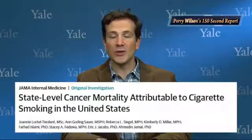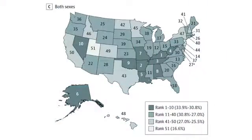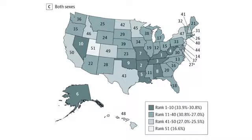For lung cancer, most estimates place that number between 75 and 90%. Appearing in JAMA Internal Medicine, researchers used for the first time state-level data to figure out the PAF for a variety of cancers based on smoking. What they found is not surprising. Depending on the state, fully 15 to 34% of these cancers were attributable to smoking. Kentucky was at the top of the list, with Utah at the bottom. The trend basically mirrors smoking prevalence in the states.